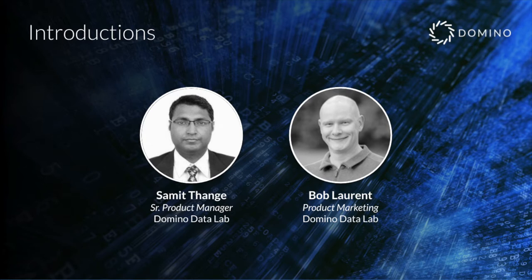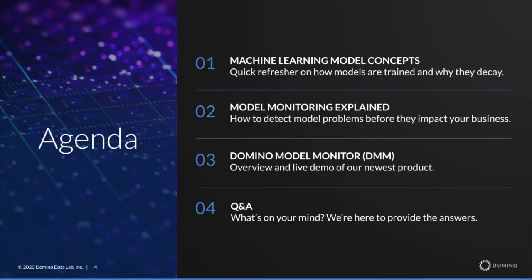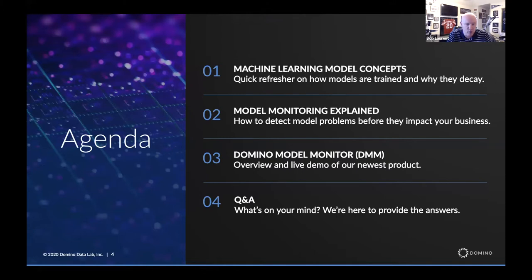My name is Bob Laurent. I'm the head of product marketing here at Domino. In terms of today's agenda, I'm going to start off with a very brief level setting around machine learning. It's going to be important as we talk about model monitoring that we set a level set on how models are trained and why they decay. Then we'll spend a little bit of time talking about how to detect model problems before they can impact your business. Then I'll give a brief overview of Domino Model Monitor and Samit's going to give a live demo of the product.